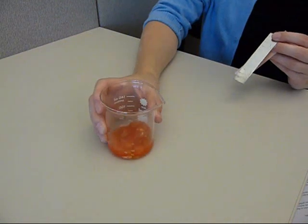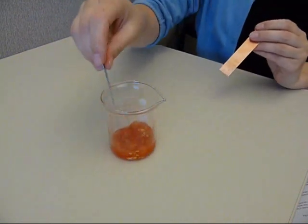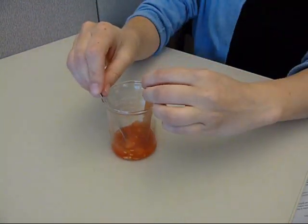Mash up the tomato into a pulpy mixture and insert zinc and copper electrodes so that they are not touching each other.